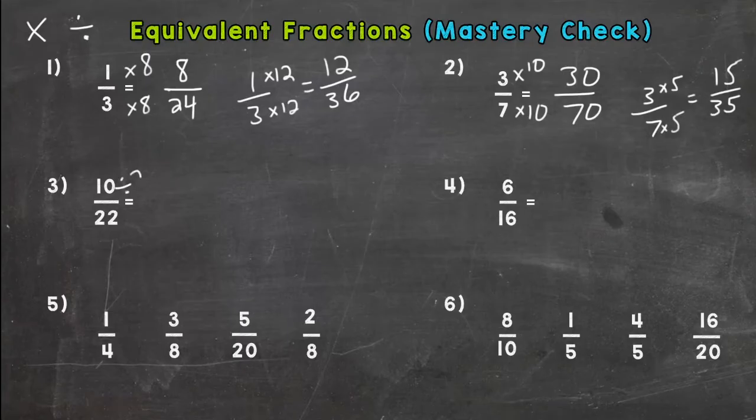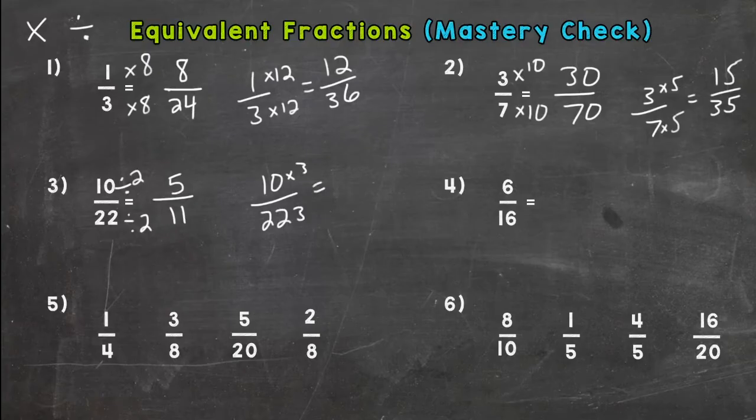10 and 22 do have a common factor. They're both even so you can automatically use two. Divide them both by two and I get 5/11ths. Or let's multiply them both by three and get 30 over 66. That's not a 60, that's a 66. So 22 times three equals 66.